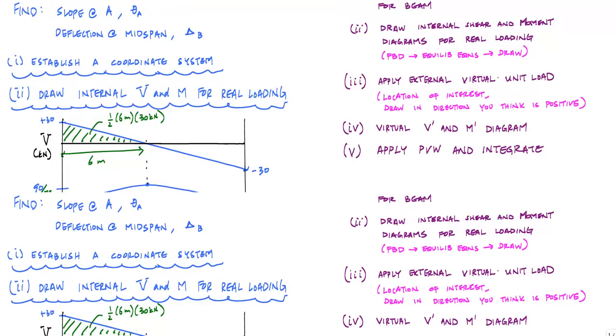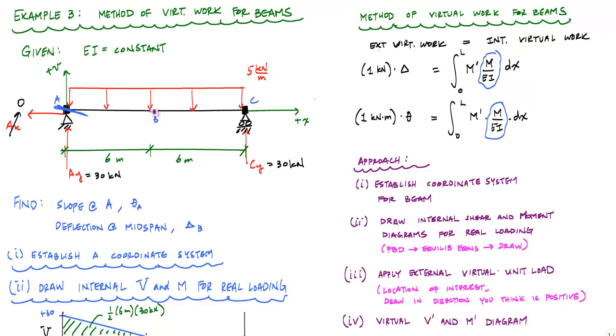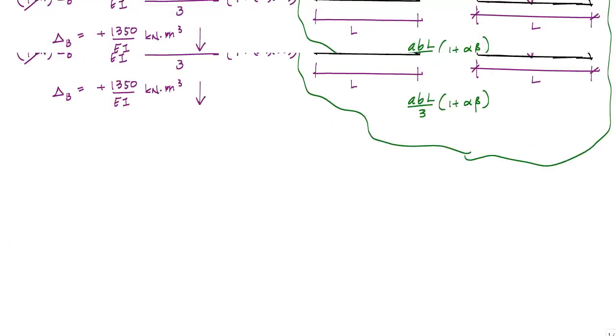point B moving downwards would be a negative displacement of point B according to the VX coordinate system. So in terms of the VX coordinate system,